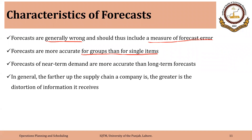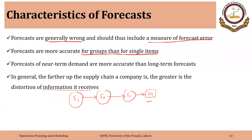Finally, the farther up the supply chain a company is, the greater is the distortion of information it receives. For example, the original equipment manufacturer has suppliers, and those suppliers have level-two suppliers, and so on. The more we move from the central organization of the supply chain — either upstream toward suppliers or downstream toward distributors — the less accurate the forecast and the more distorted the demand information becomes. This is called the bullwhip effect.